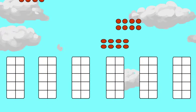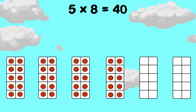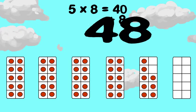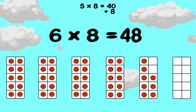How about six times eight? Remember that five times eight is forty. Add one more group of eight. Forty plus eight is forty-eight. So six times eight is forty-eight.